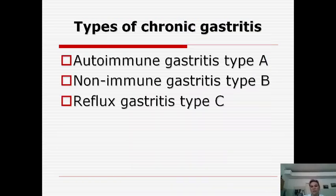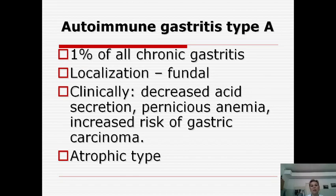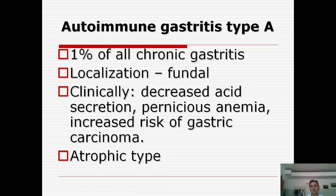Regarding chronic gastritis, there are three types: autoimmune gastritis type A, non-immune gastritis type B, and reflux gastritis type C. Type A is autoimmune — it is a rare form, representing only one percent of all chronic types. Localization is in the fundal zone of the stomach; clinically it presents with decreased acid secretion (hypoacidity). Complications include pernicious anemia and increased risk of gastric carcinoma. The histological type is atrophic.